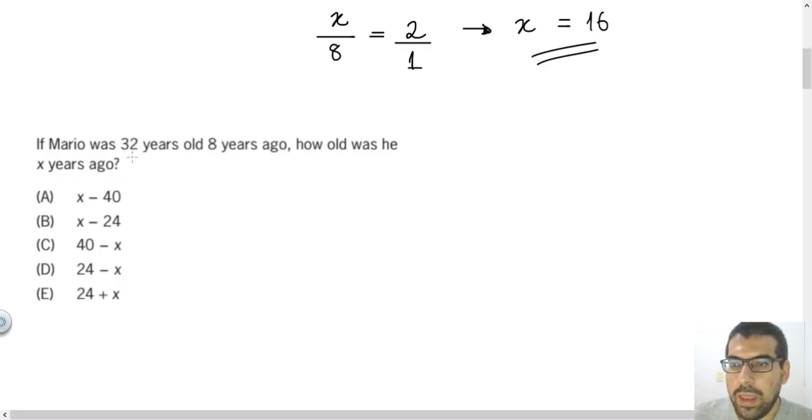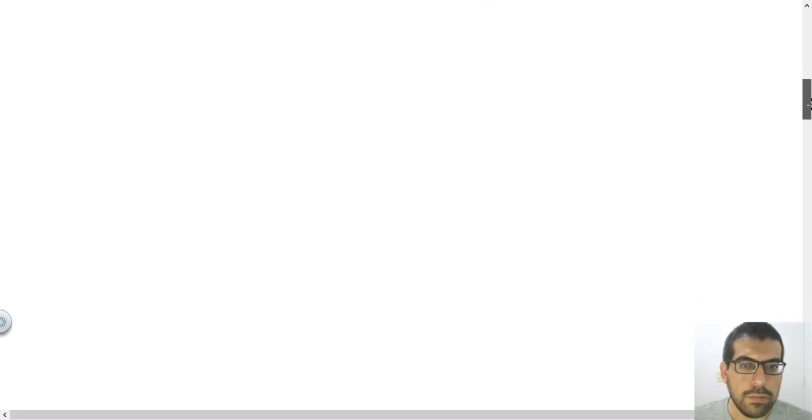So if Mario was 32 years old 8 years ago, it's because nowadays Mario is 40 years old. Again, 32 years old 8 years ago, so nowadays 40 years old. So how old was he x years ago? If nowadays he's 40 years old, x years ago he was 40 minus x years old. Let's see, A will be the answer. Let's jump to the third question of this video.